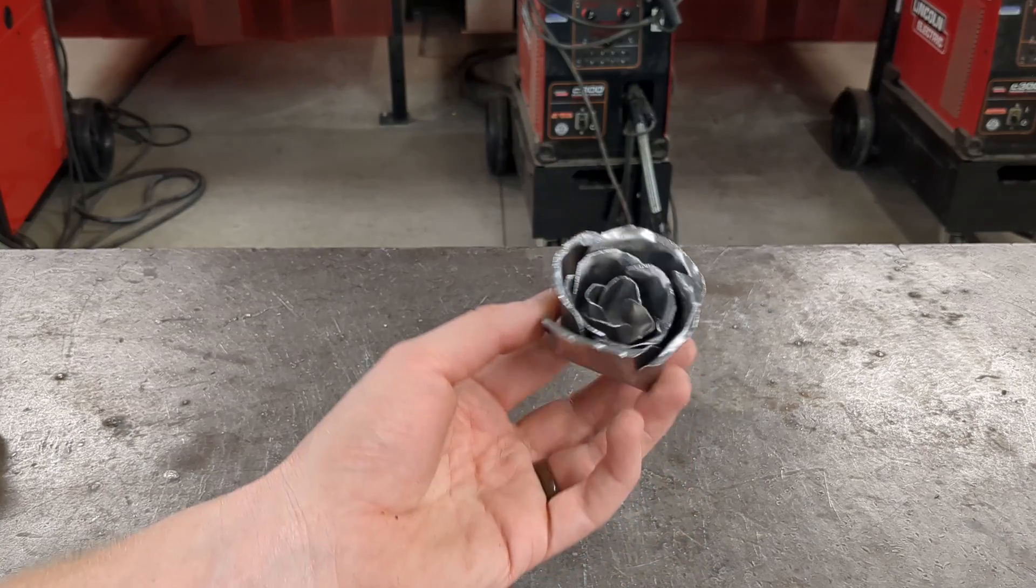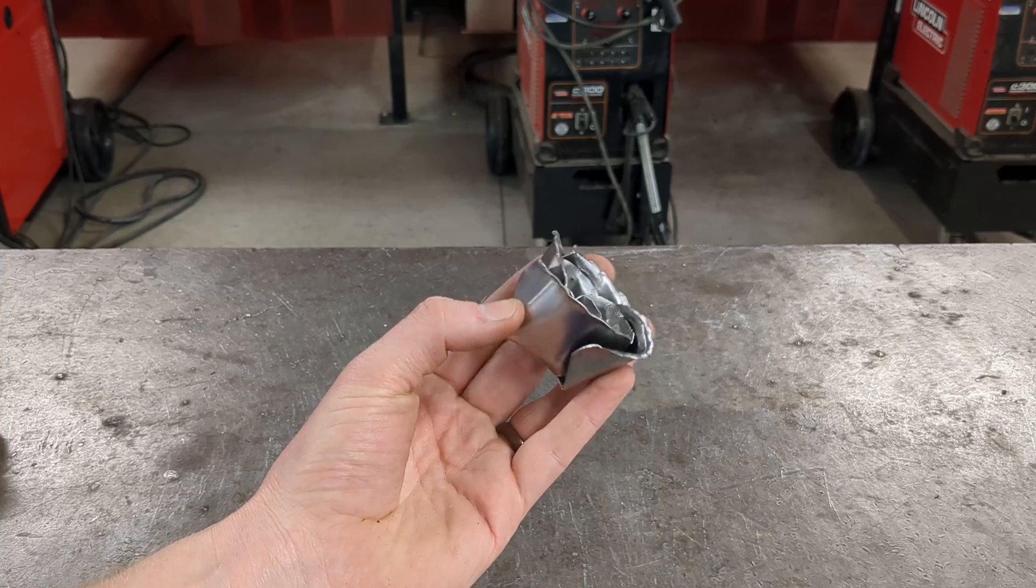We're going to start by making this little three layer version of the flower. And if you don't have a spot welder, don't worry, I'll cover alternate methods for that step at the end of the video.